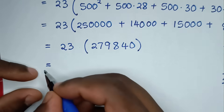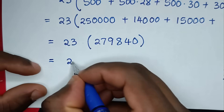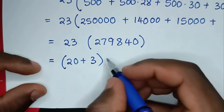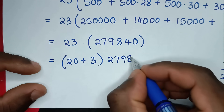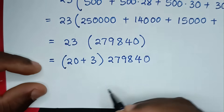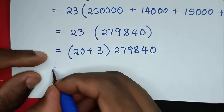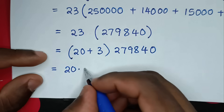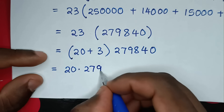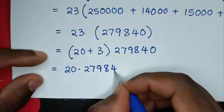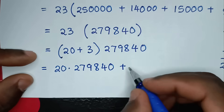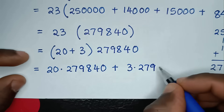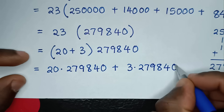Then in the next step it will be equal to 23, and 23 is the same as 20 plus 3, bracket, times 279,840. So it will be equal to 20 times 279,840, plus 3 times 279,840.